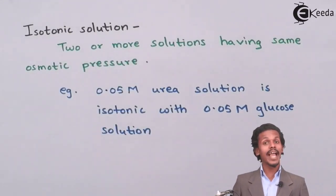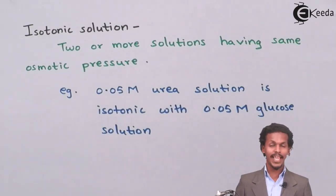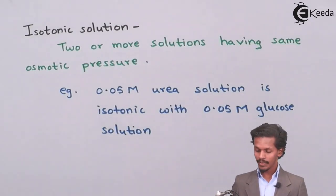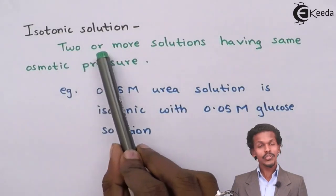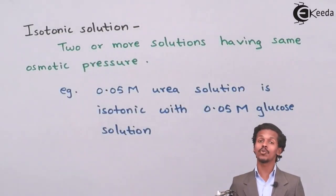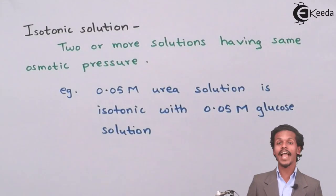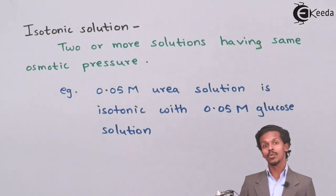The first one is isotonic solutions. Which solutions are known to be isotonic? Two or more solutions having the same osmotic pressure are said to be isotonic to each other. ISO means same, so therefore isotonic means two solutions having the same osmotic pressure.